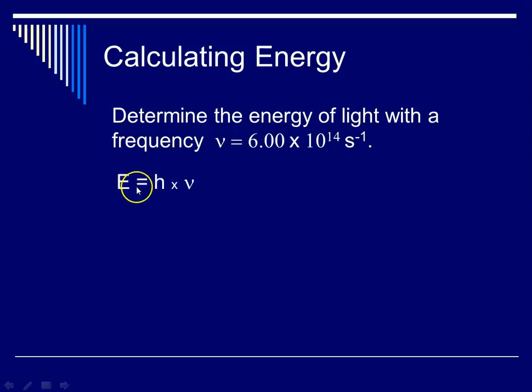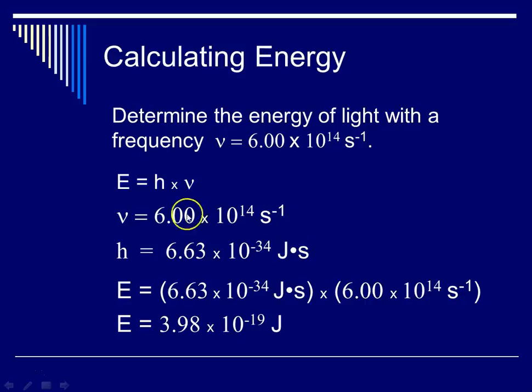So here, E is equal to Planck's constant times frequency, where our frequency is 6 times 10 to the 14th inverse seconds. Planck's constant is that funny number with the unit joules times seconds. And E is going to be Planck's constant times our frequency, and joules times seconds times 1 over seconds. So seconds is going to cancel out, and that leaves us with joules for our unit. And we've calculated that E here is equal to 3.98 times 10 to the minus 19th joules.